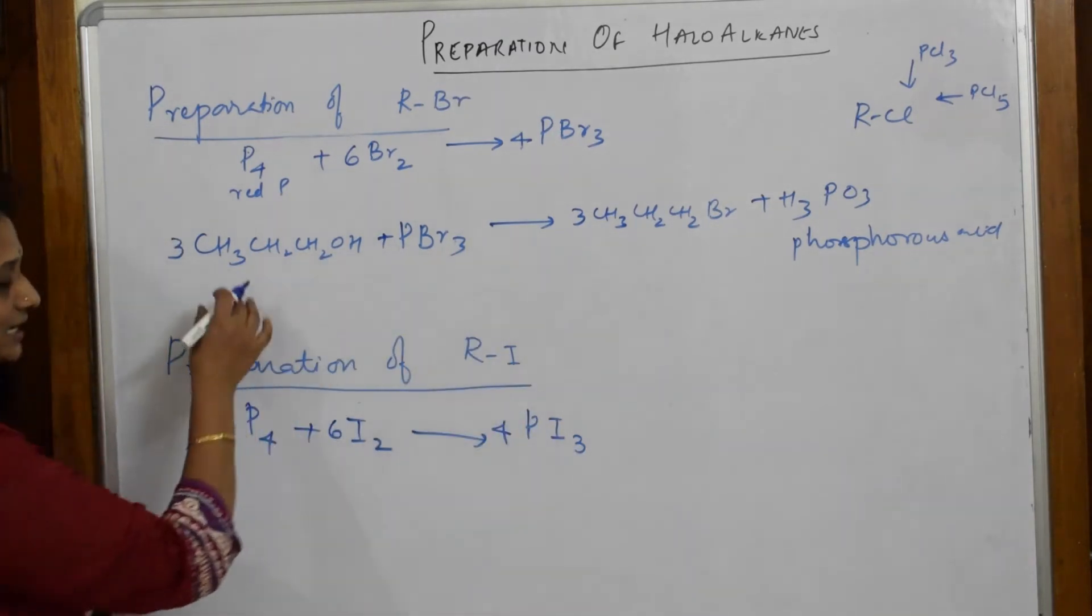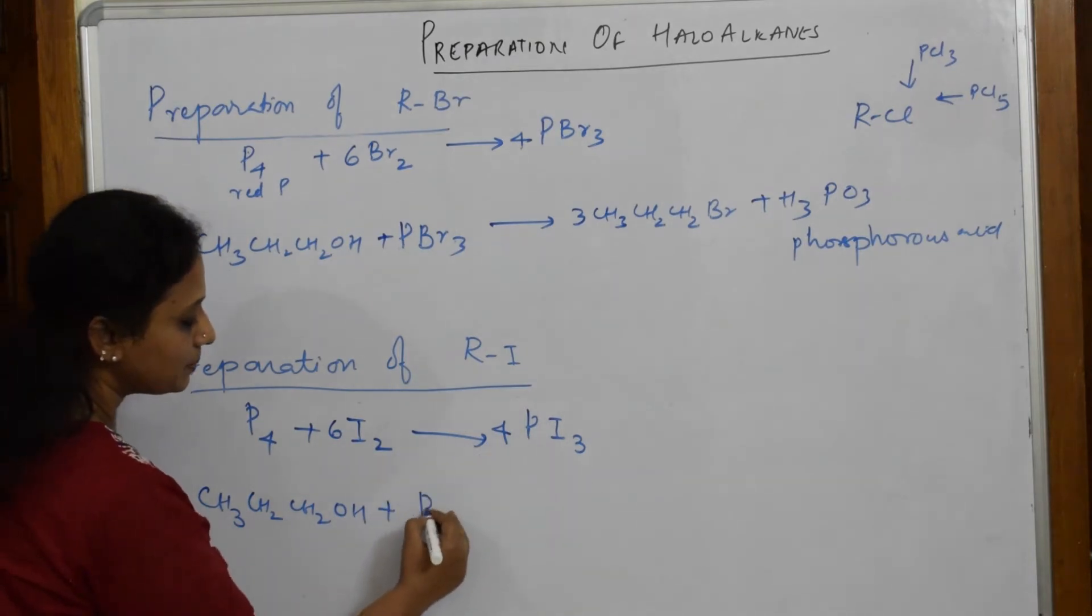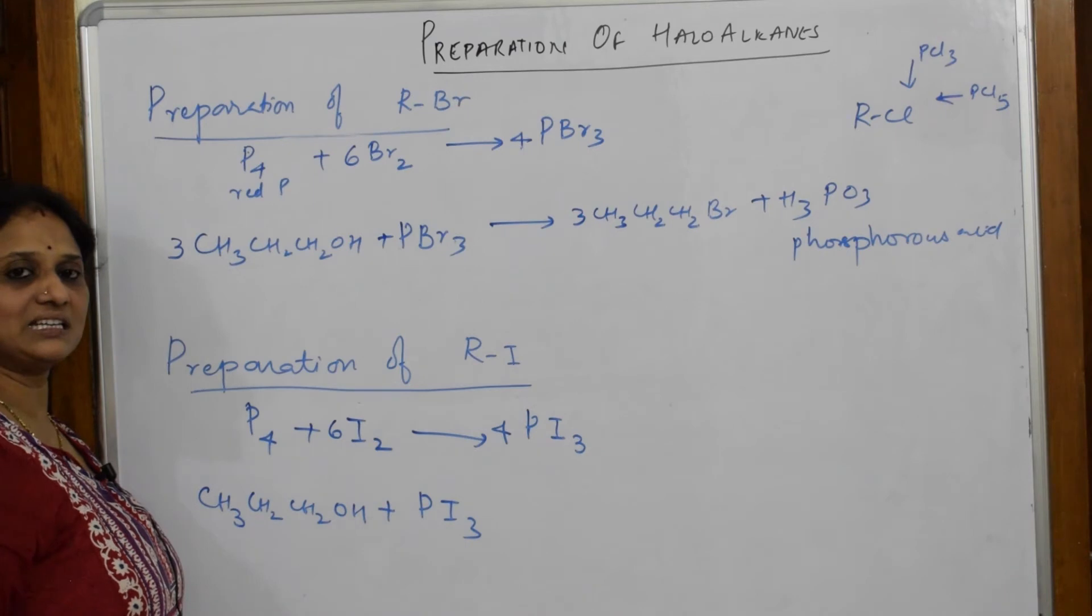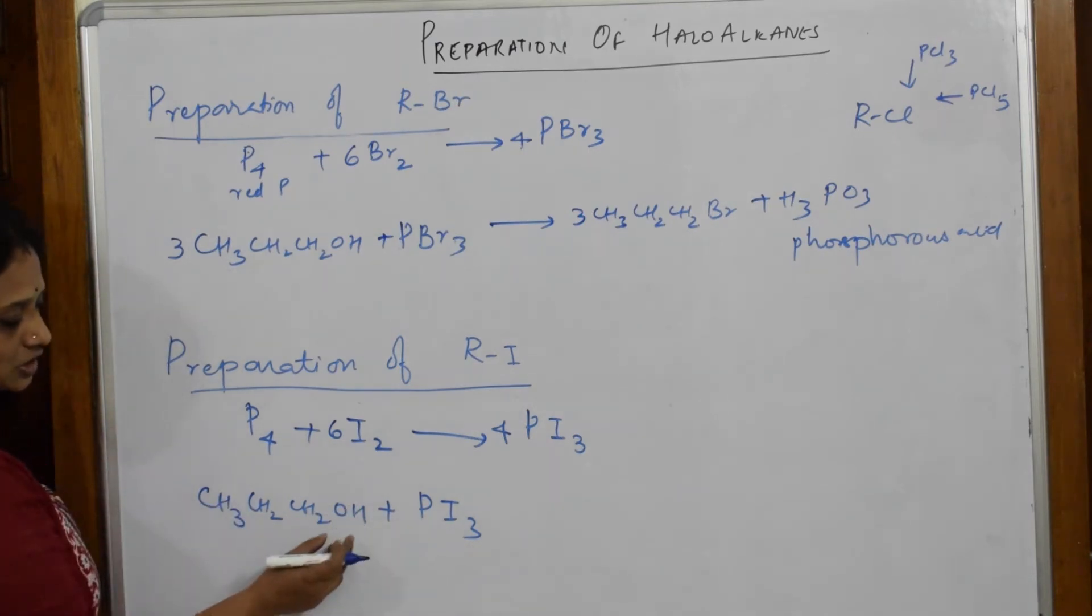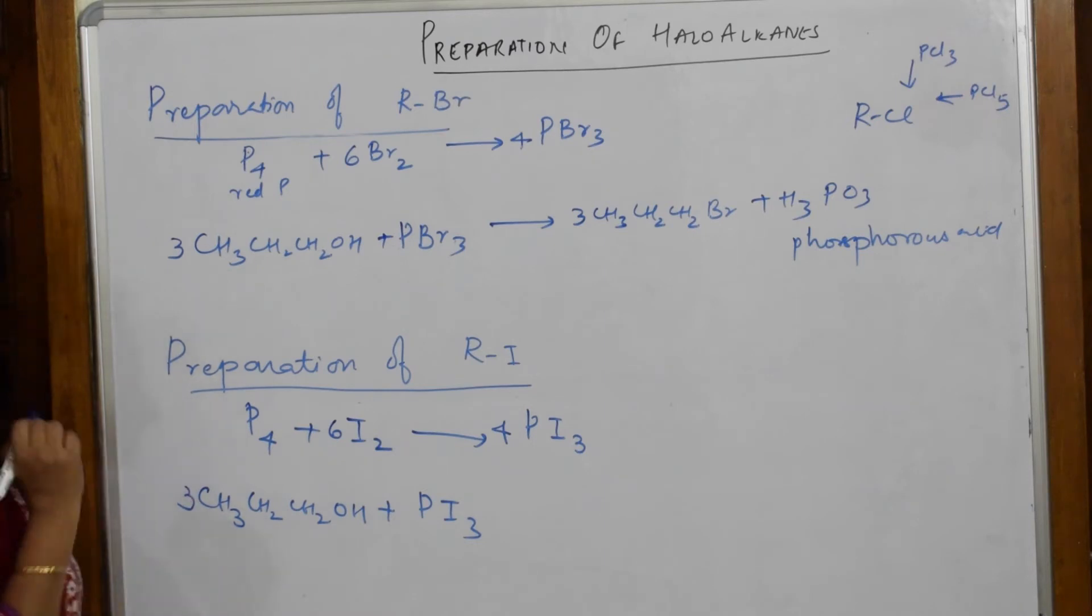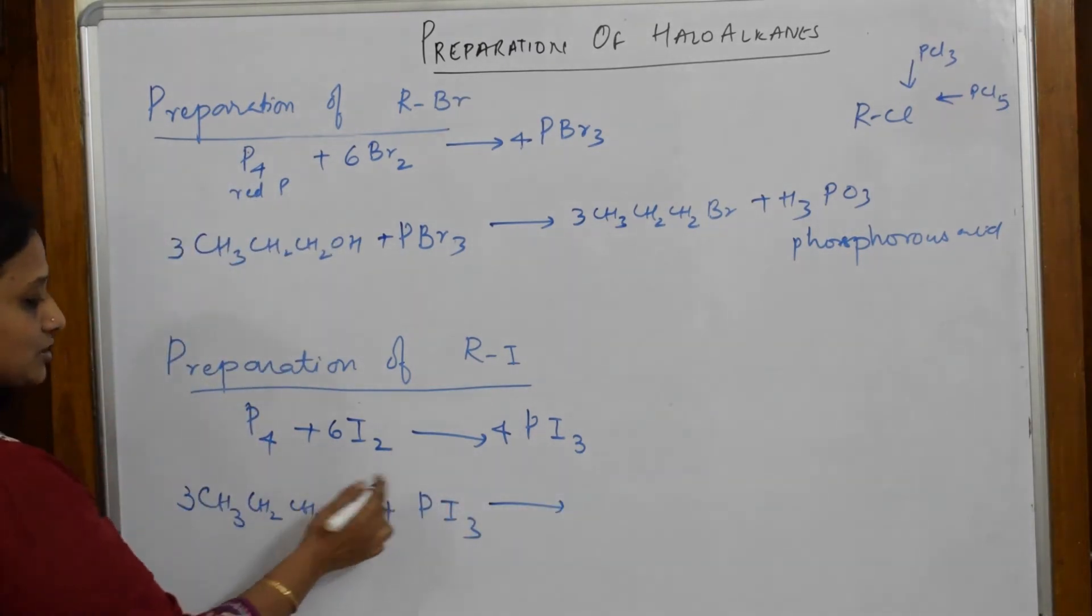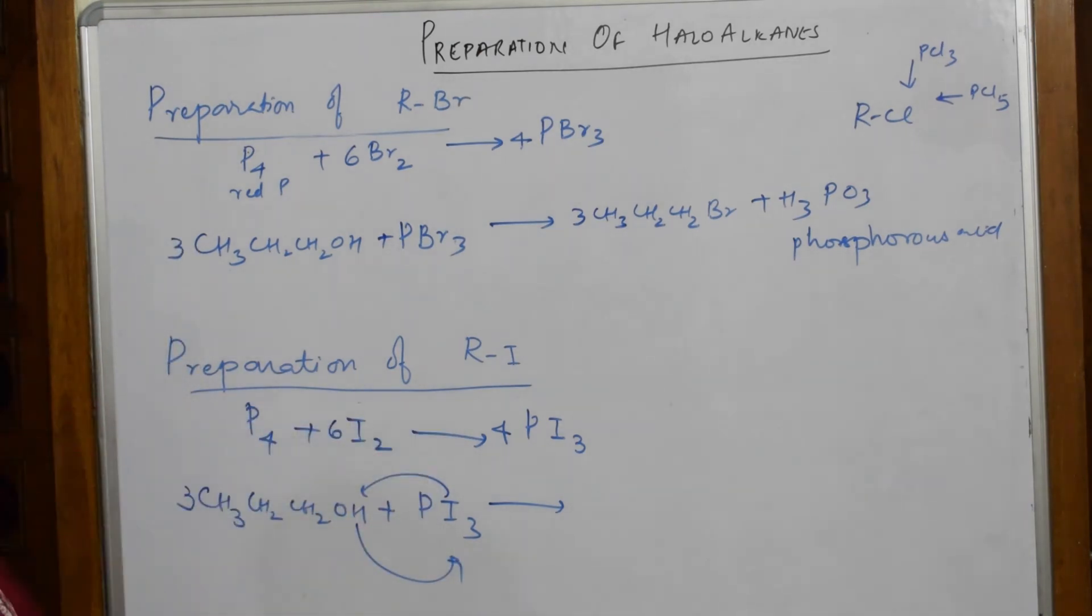Now you are going to pick up this and react it with an alcohol. CH3CH2CH2OH plus your PI3. Now PI3, PBR3, PCL3, all products and byproducts are similar. 3 iodines, so 3 OH should be 3. Write that OH here. Just now you are going to replace this I to this position and your H3PO3 will just get eliminated.